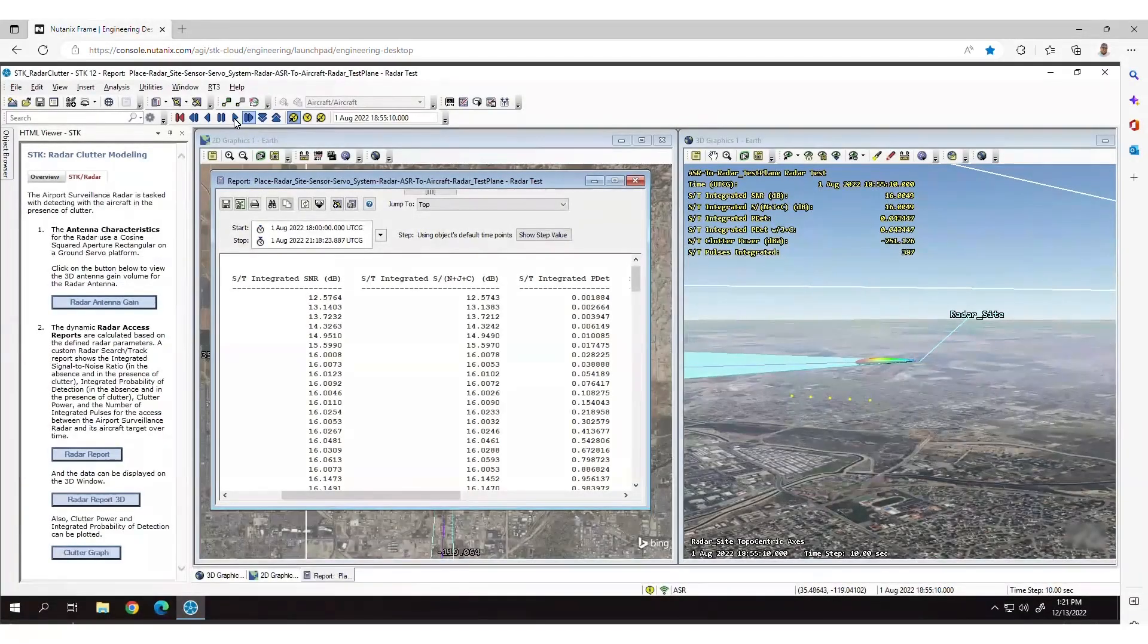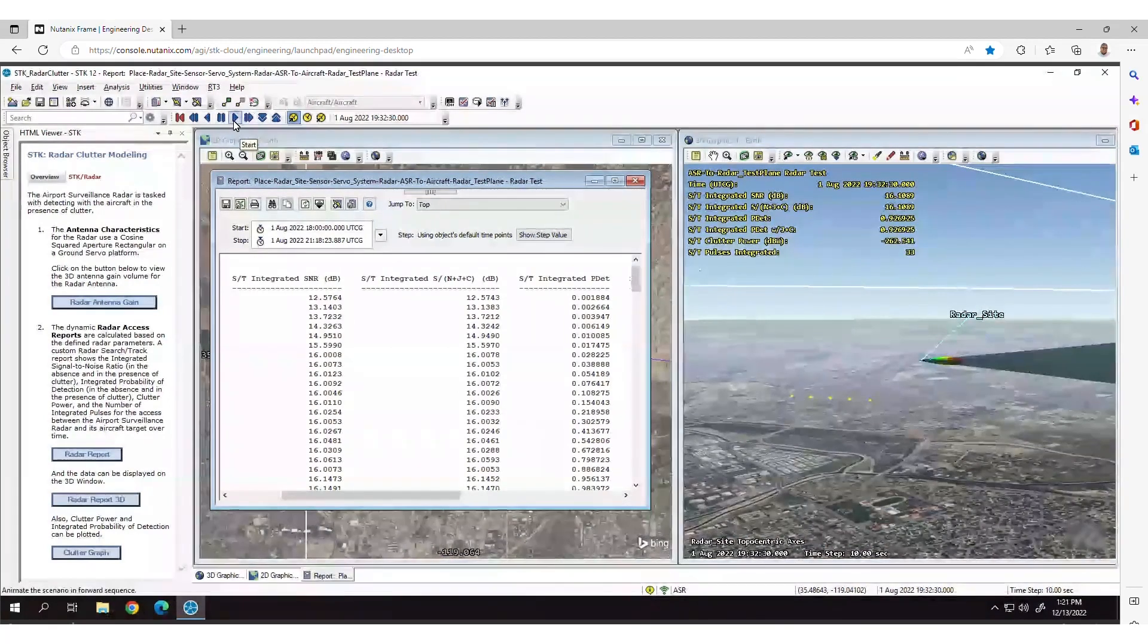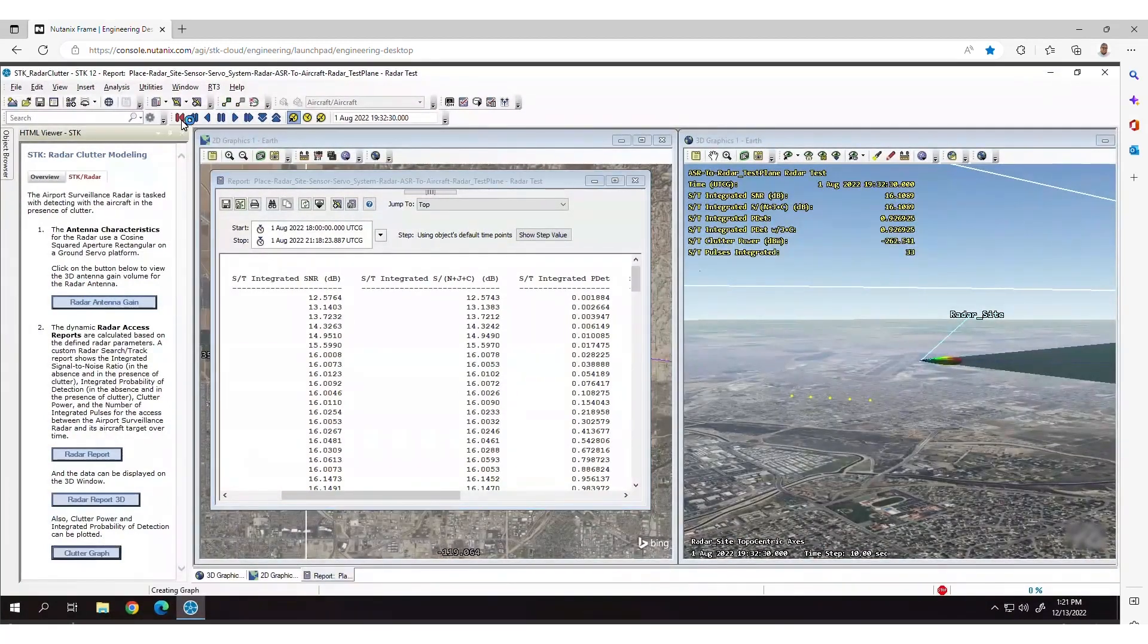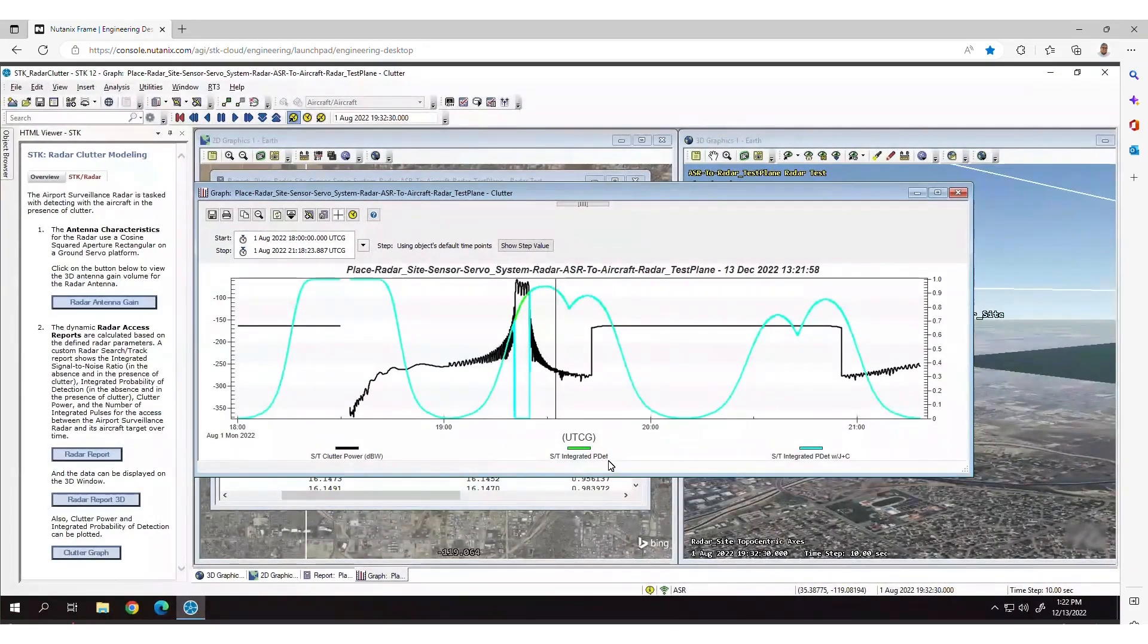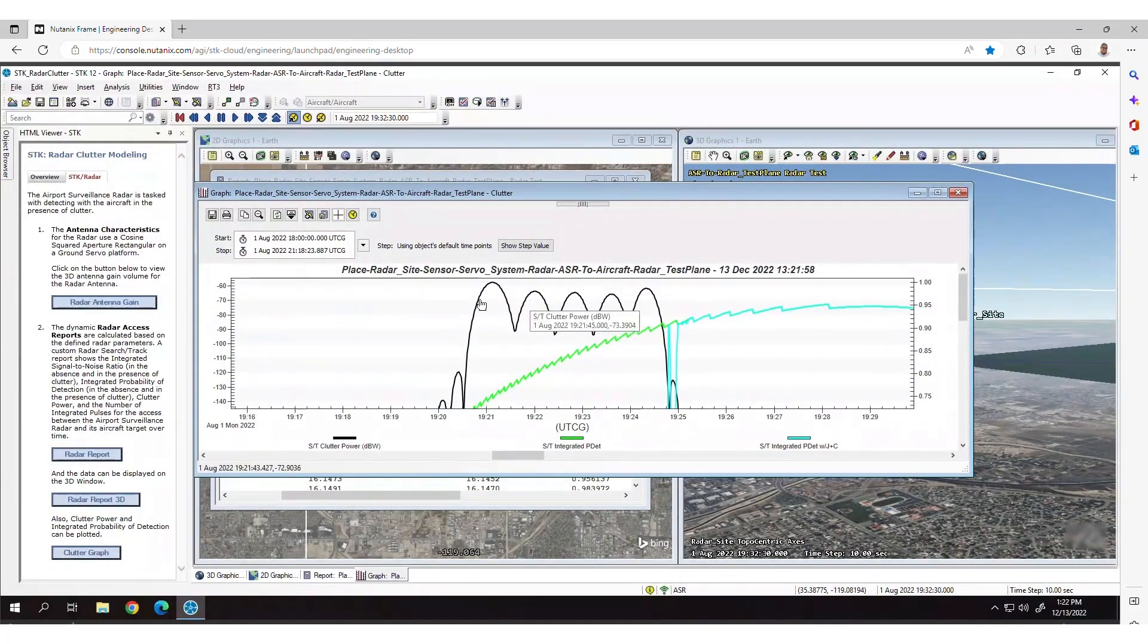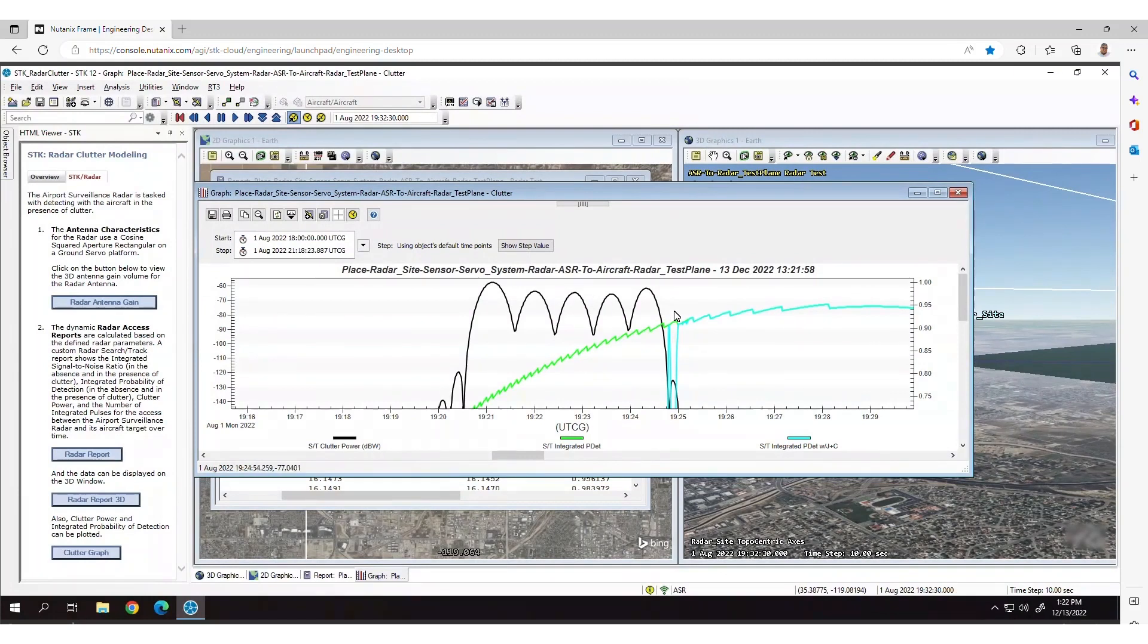For users of SDK's radar modeling capabilities, a critical element is the ability to account for environmental effects on the detection and tracking of target objects in a scenario. An important contributor to radar interference is clutter from the surrounding environment. Clutter sources may be things like buildings, trees, or even the ocean's surface.